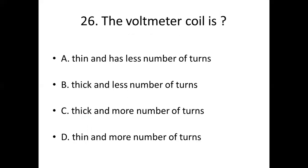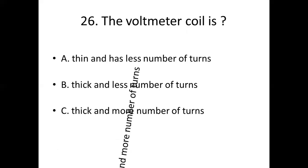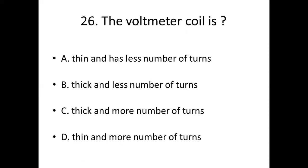26th bit: The voltmeter coil is dash. Option A: Thin and has less number of turns. Option B: Thick and less number of turns. Option C: Thick and more number of turns. Option D: Thin and more number of turns. Answer — Option D: Thin and more number of turns.